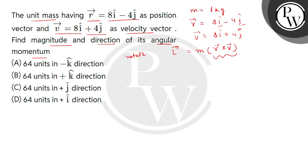First of all, r vector cross v vector. Find the determinant. First row: i cap, j cap, k cap. Second row: r components 8, minus 4, 0. Third row: velocity components 8, 4, 0.